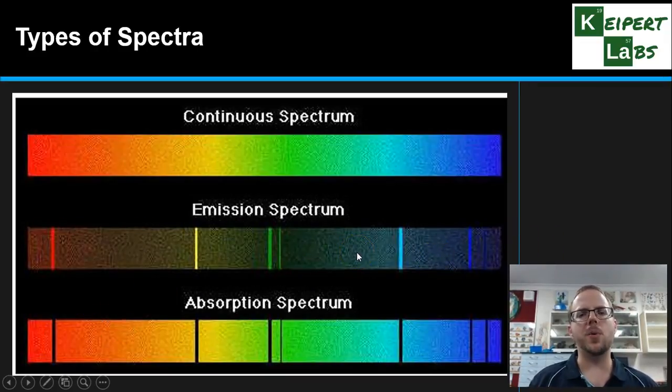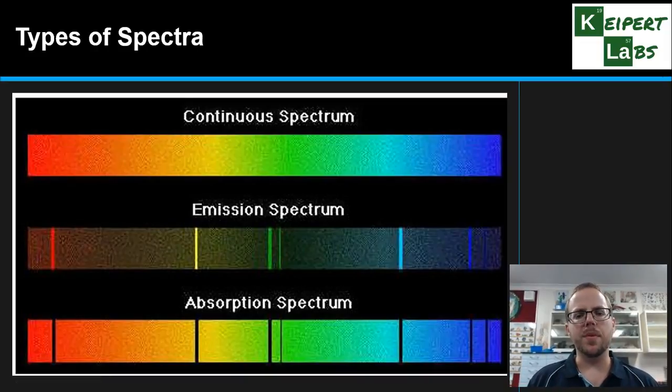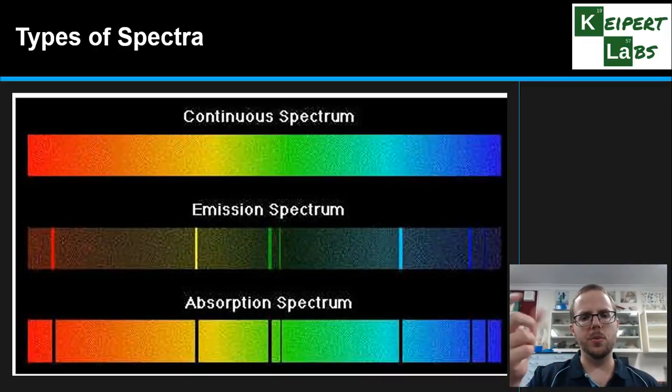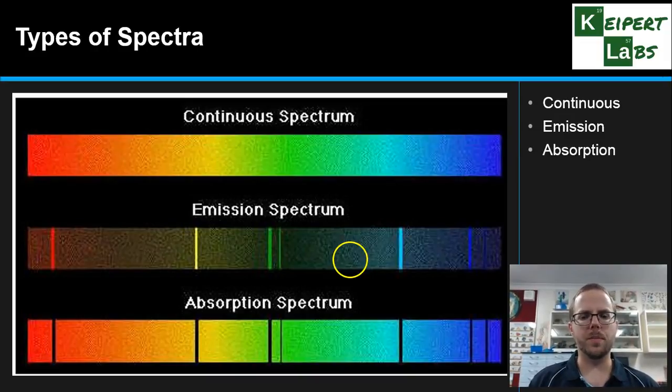That relates back to our Bohr model of the atom from way back and thinking about how electrons jump between shells by absorbing and emitting a specific color of light. So we have continuous, emission and absorption spectra that we can analyze and identify.